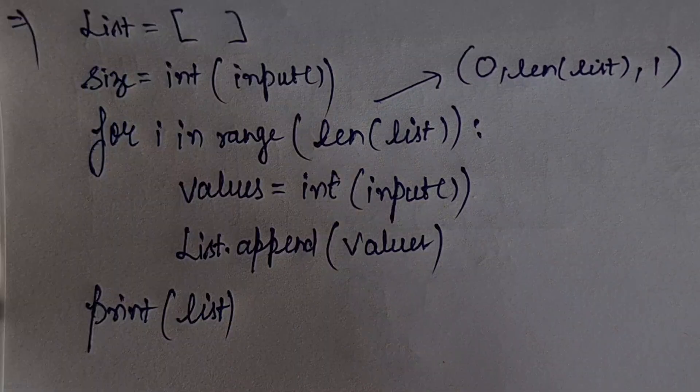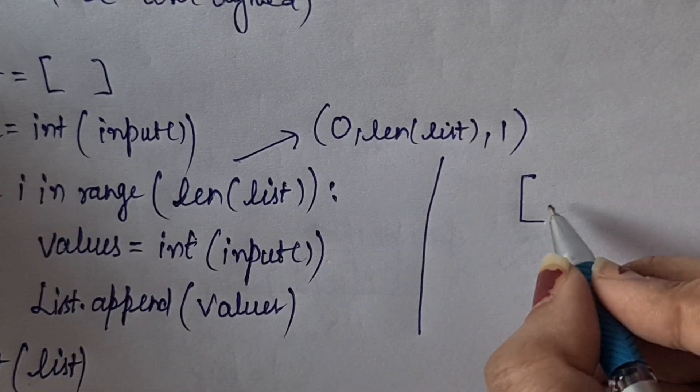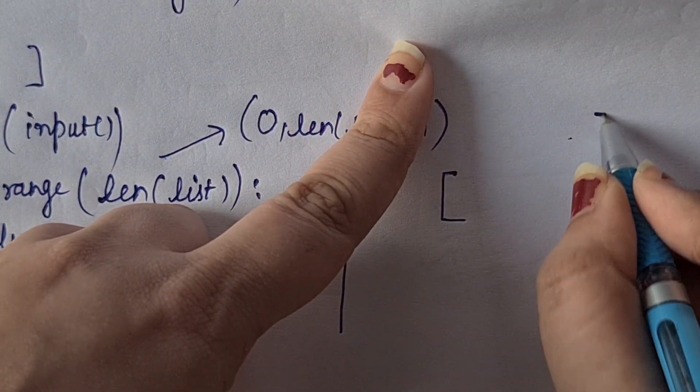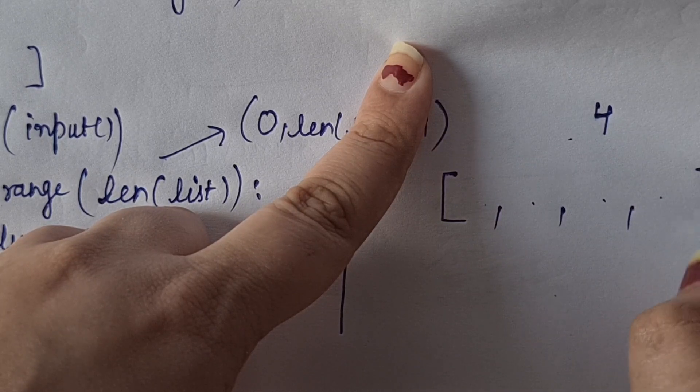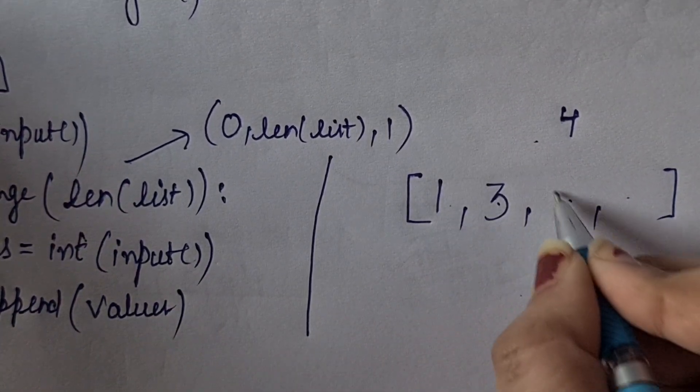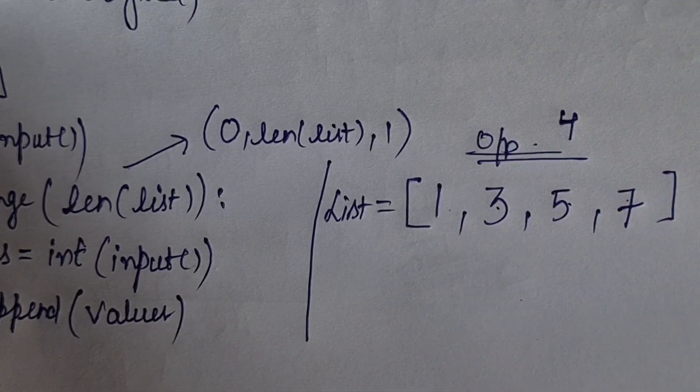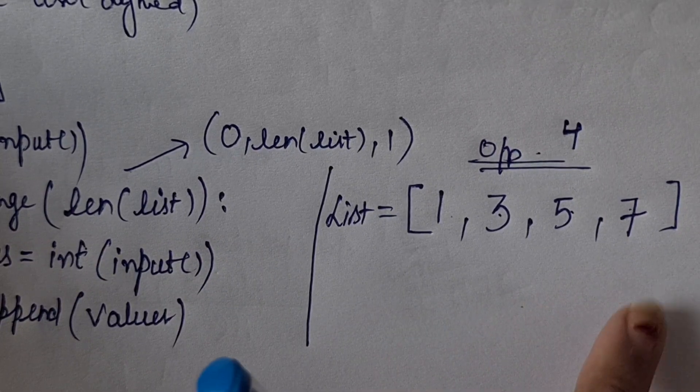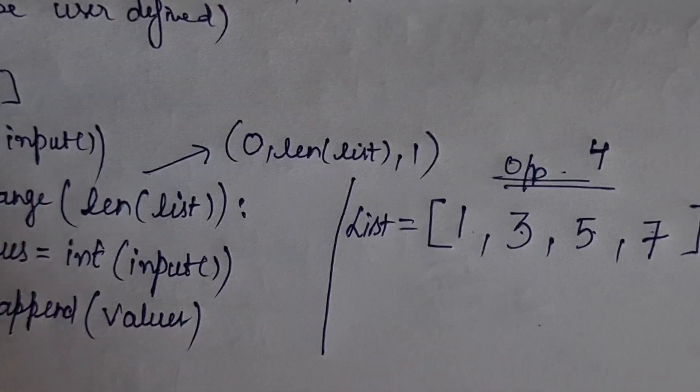So what is the user defined list? For example, the user has given values. The list was empty initially. Size, for example size is 4. So the indices are 0, 1, 2, 3. When we go from right to left side of the list.